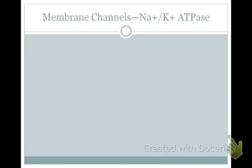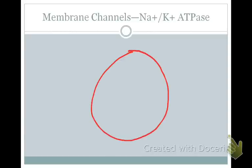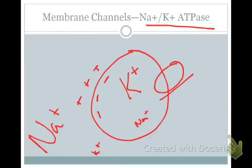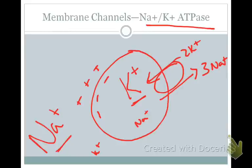Ions need channels to move across the cell membrane. One important channel is actually a pump — the sodium-potassium ATPase. Inside the cell is relatively more negative, with more potassium inside and more sodium outside. The sodium-potassium ATPase establishes this gradient by pumping three sodium ions out for every two potassium ions brought in. This concentrates potassium inside and sodium outside, and since three positive charges leave but only two enter, it helps establish the relatively negative inside membrane potential.